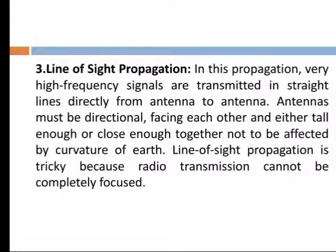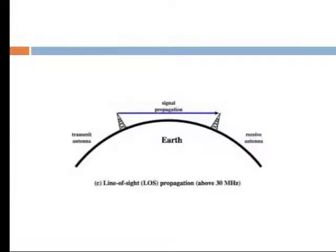In line-of-sight propagation, very high-frequency signals are transmitted in a straight line directly from antenna to antenna. The antennas must be directional, facing each other, and either tall enough or close enough together not to be affected by the curvature of the earth. Line-of-sight propagation is used for shortwave signals at frequencies above 30 MHz.